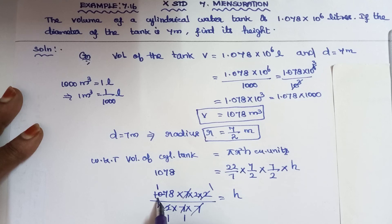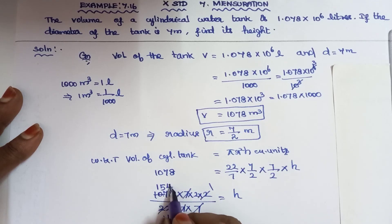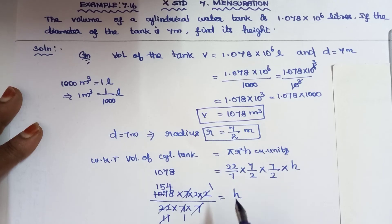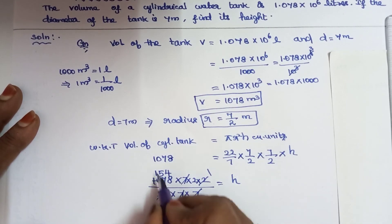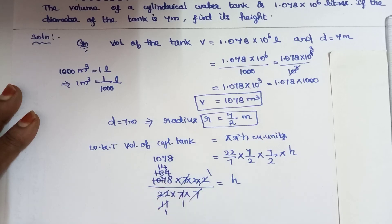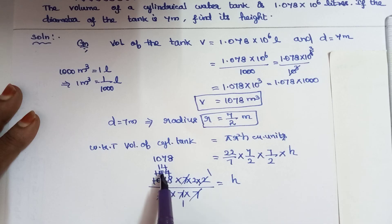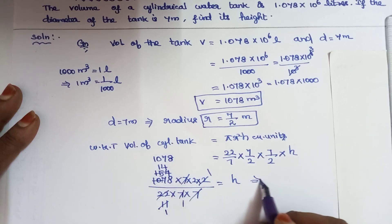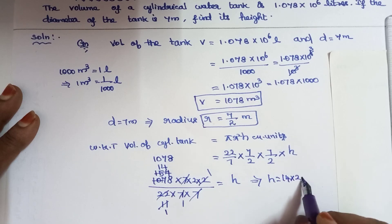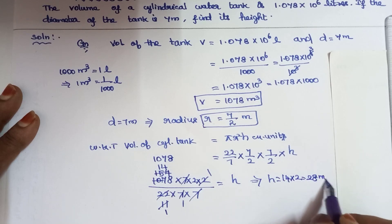Working through the calculation: 3 into 37 is balanced, 7 into 5 is 35, balance 2 into 28 is 7, 4 is 28. Using the 11th table and cancelling: 11 into 1 is 11, balance 4 is 14, then 12 cancel. So 1 into 14 gives h equal to 14 into 2, which is 28 meters.